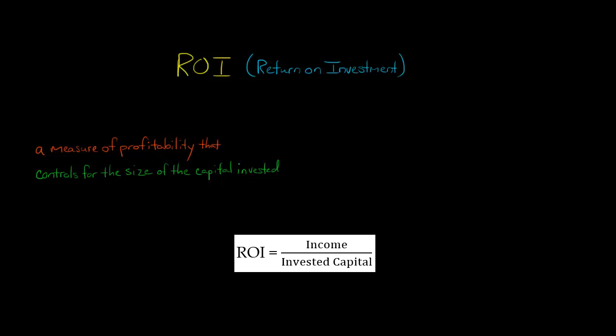In this video, I'm going to show you how to calculate ROI, which stands for return on investment. So here's the formula to compute ROI. You would take the income, let's say the income of a division at your company, and you would divide it by the invested capital. That's the capital that was employed for that division, that department of your company.